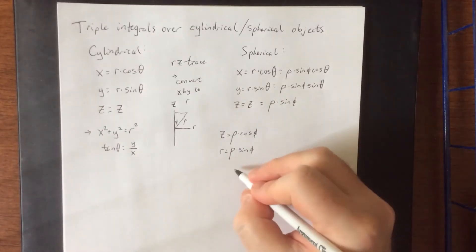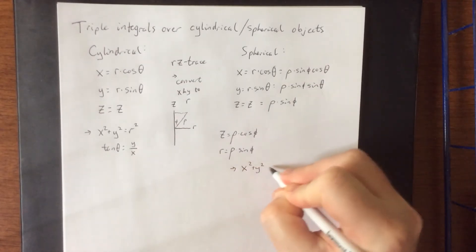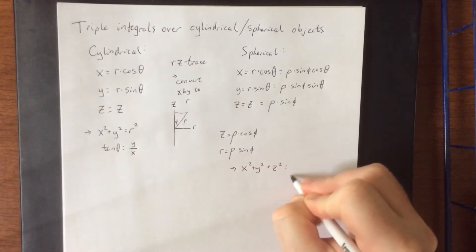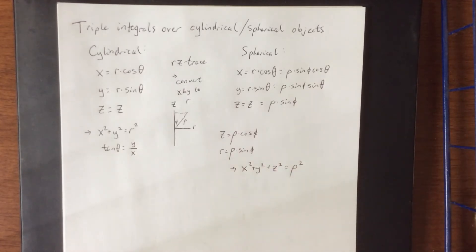As a result of all of these things we also get that x squared plus y squared plus z squared is equal to rho squared. Something that was very typical that we saw in terms of spheres.